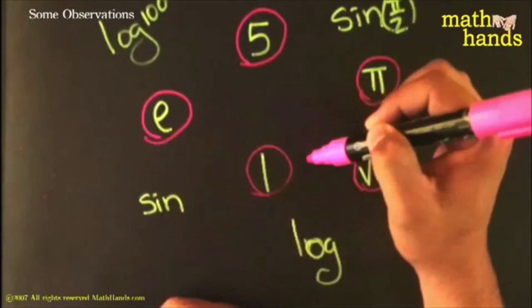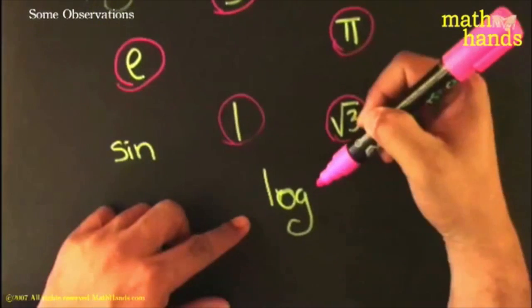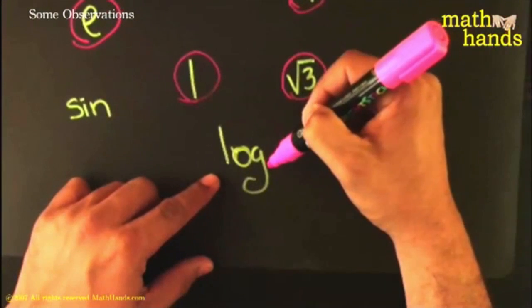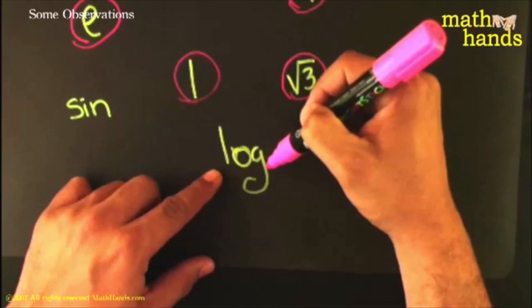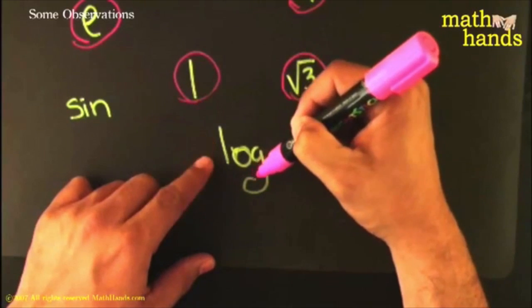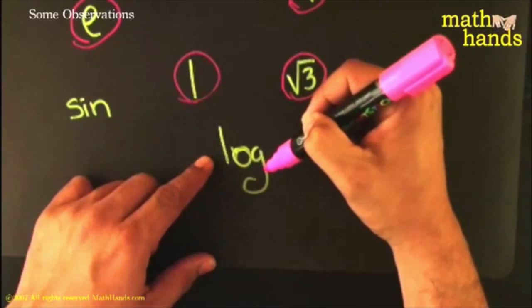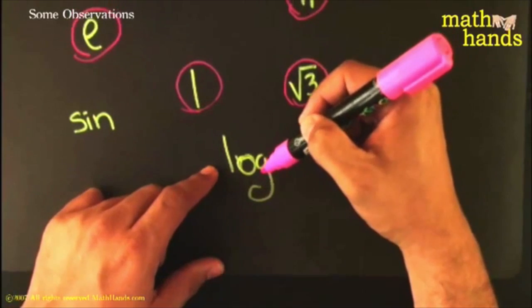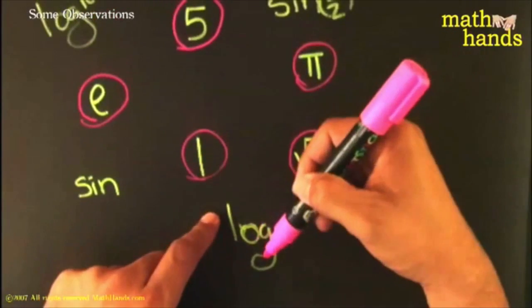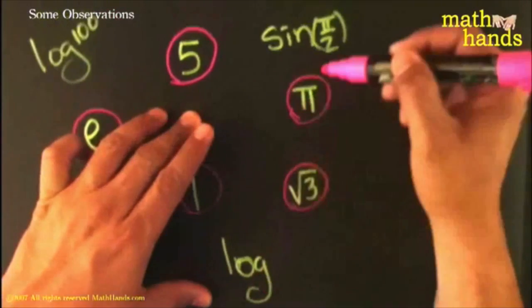They start to get some more interesting ones here, like log. Is log a number? If it is, which number is it - is it two, is it three, is it four? You start to think about it and this one's a little bit trickier. I think maybe it's not a number, so I'm going to hold off judgment on that one.